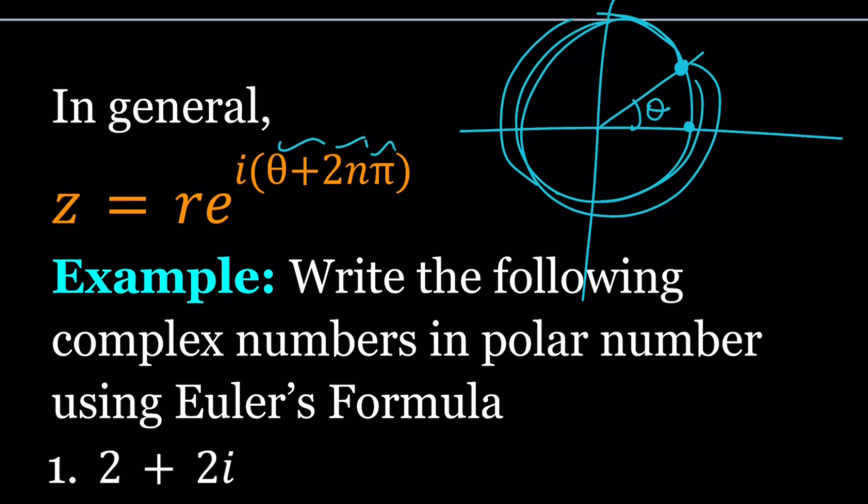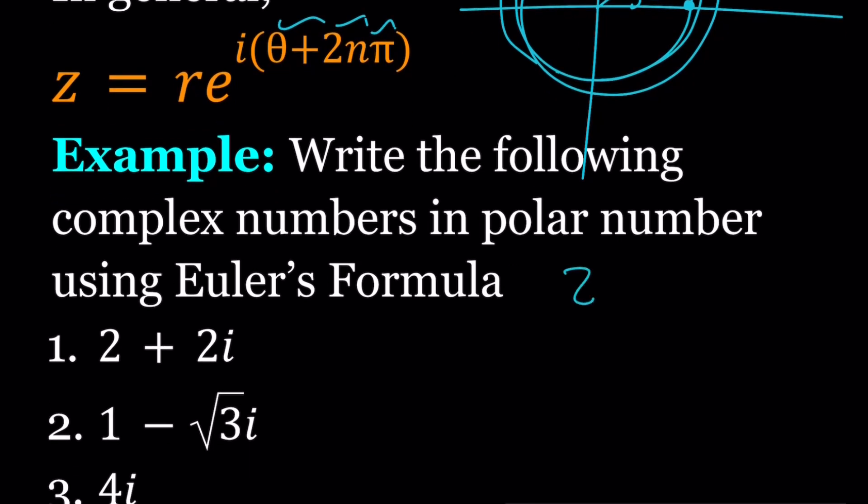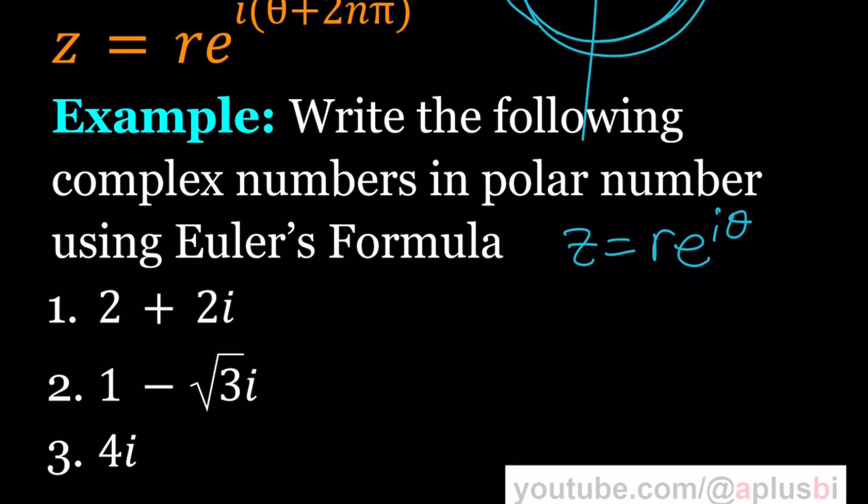So here's the next piece of exercise we're going to do, writing the following complex numbers in polar form using Euler's formula. But we're going to do that next time. So this is the end of the fourth video. Don't forget to subscribe, hit that notification bell, and stay tuned for upcoming videos. See you in the next episode. Bye.